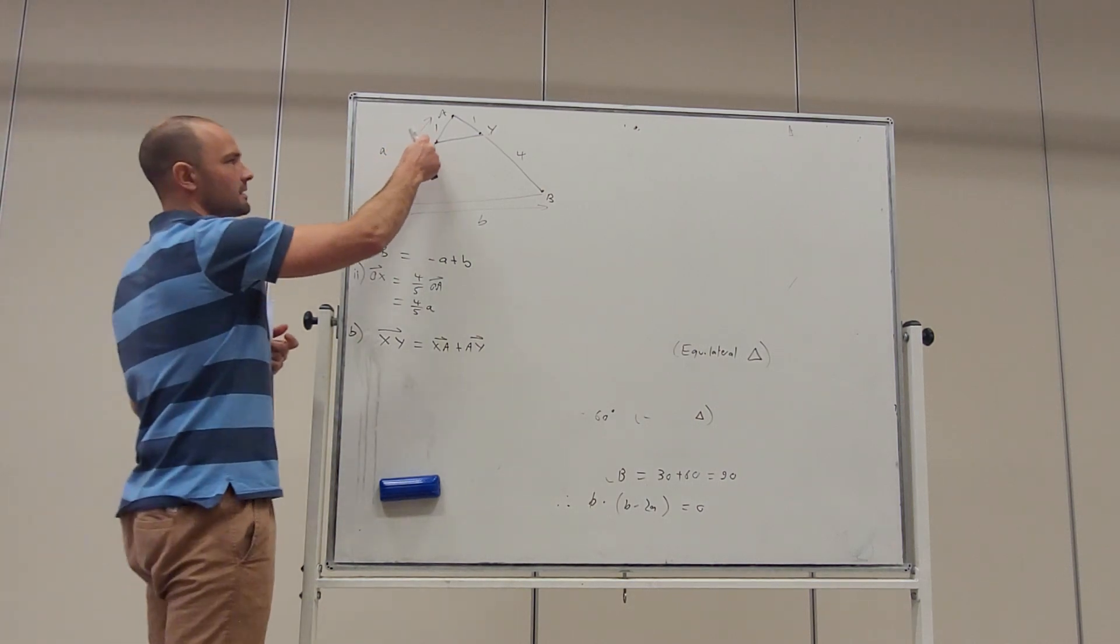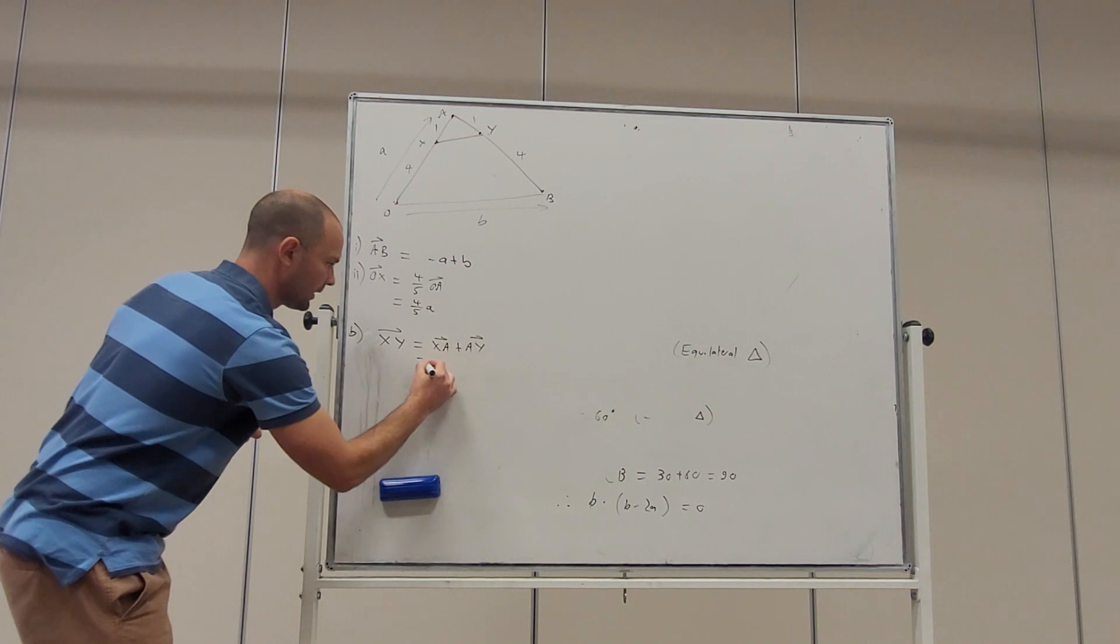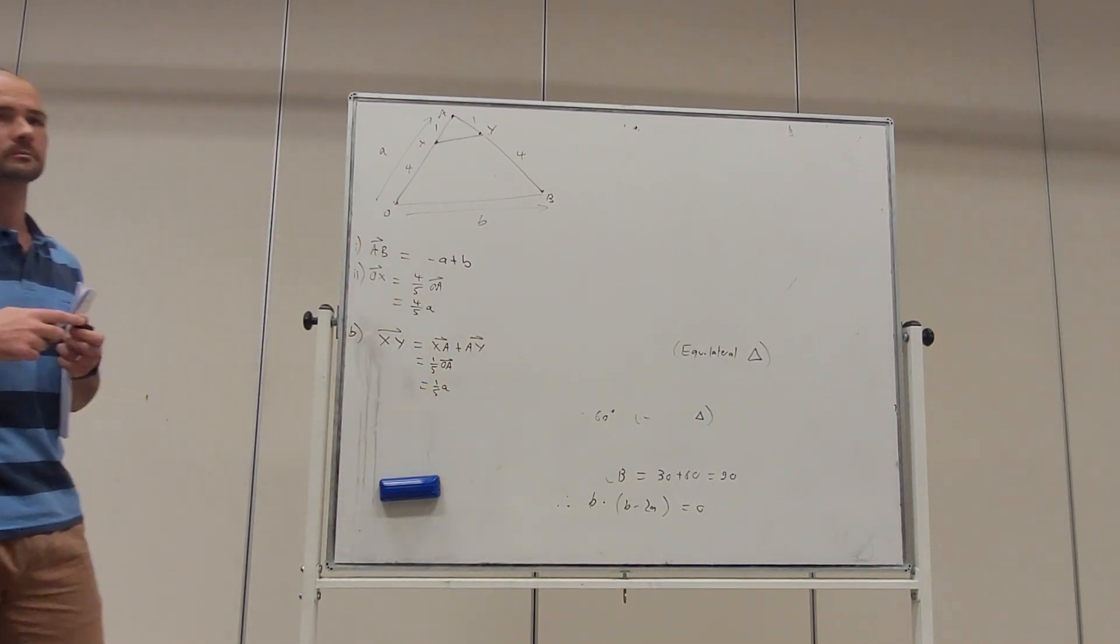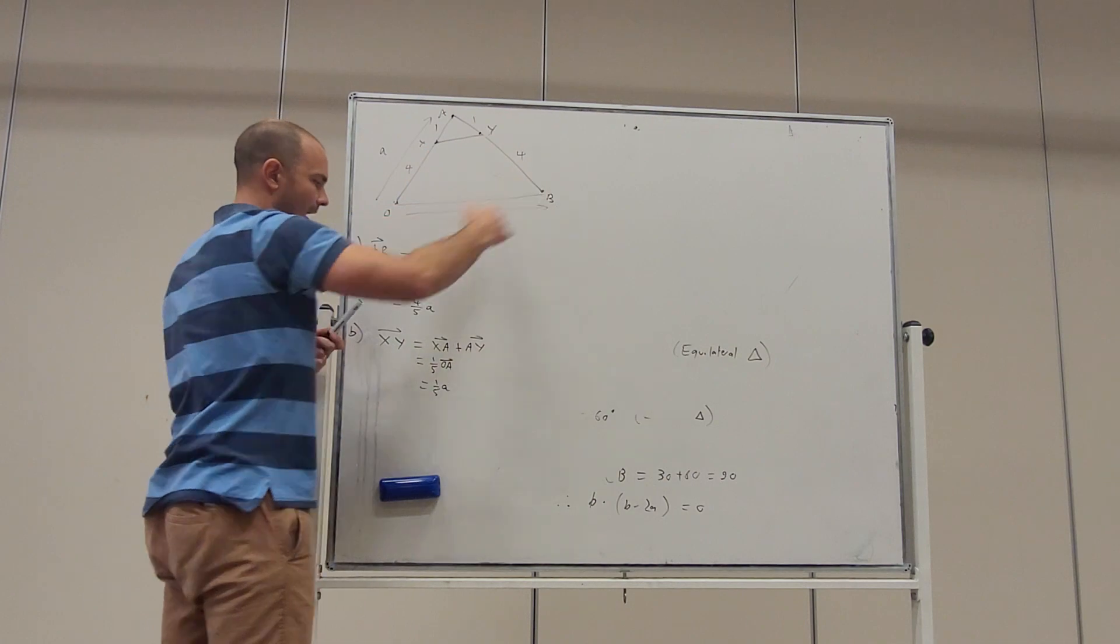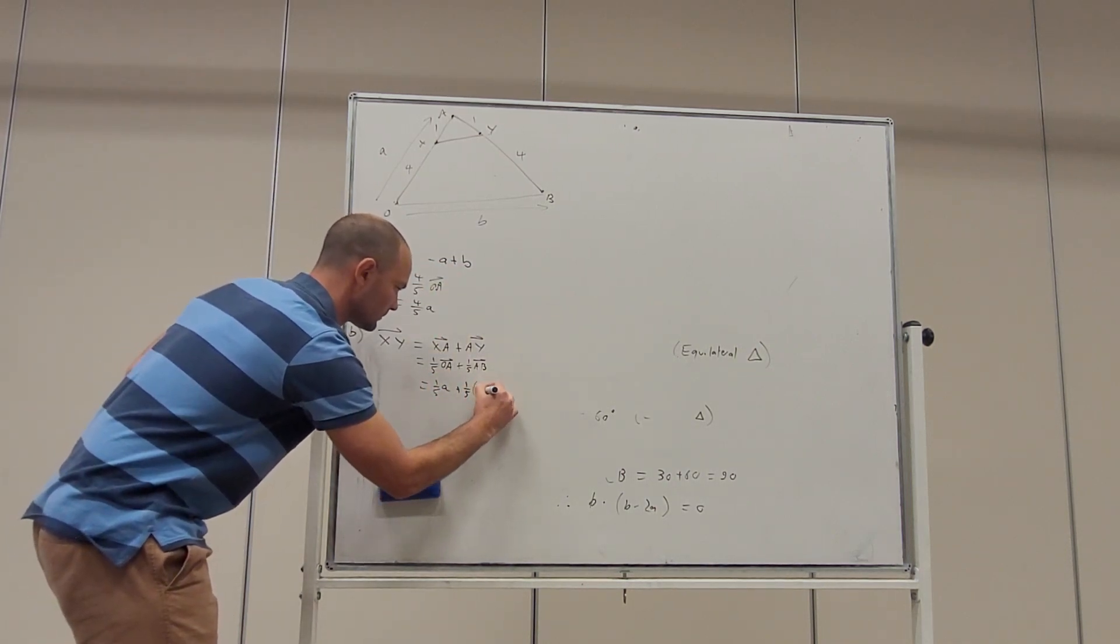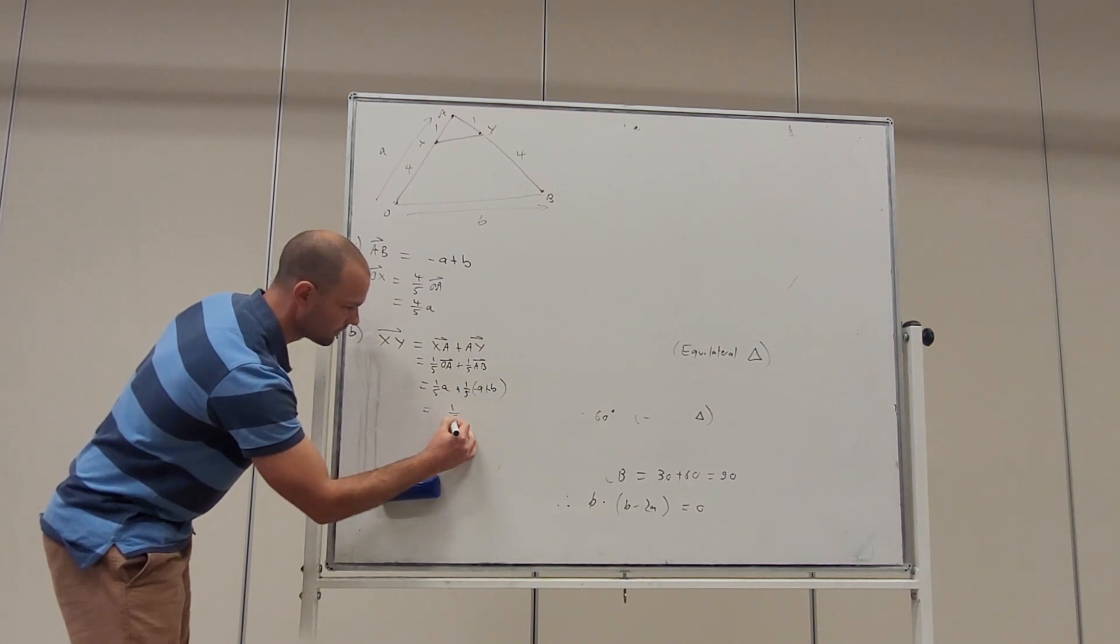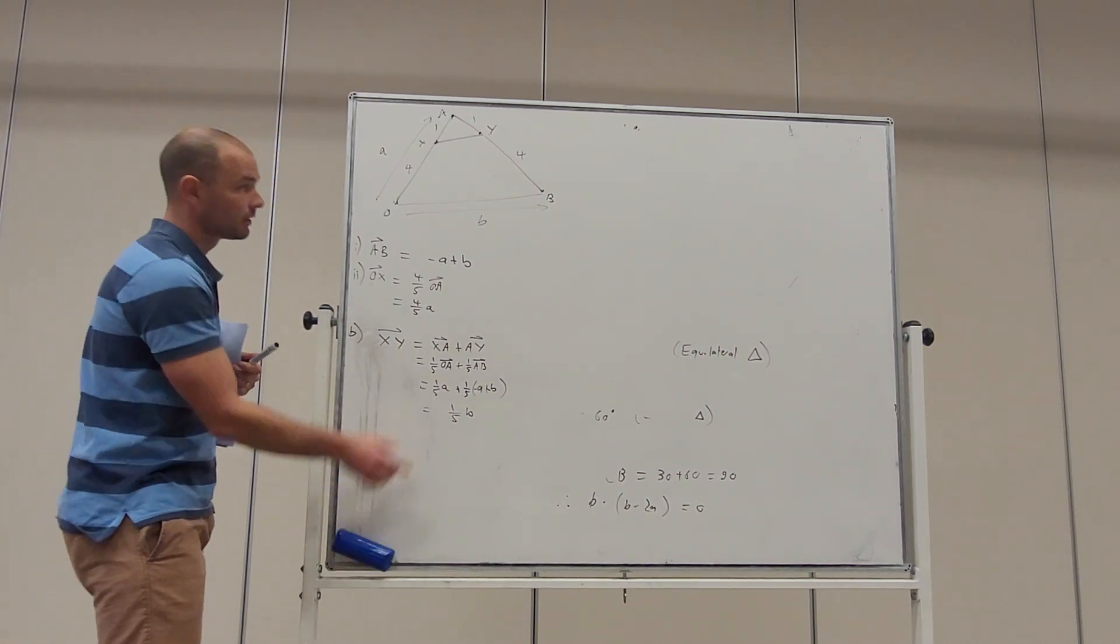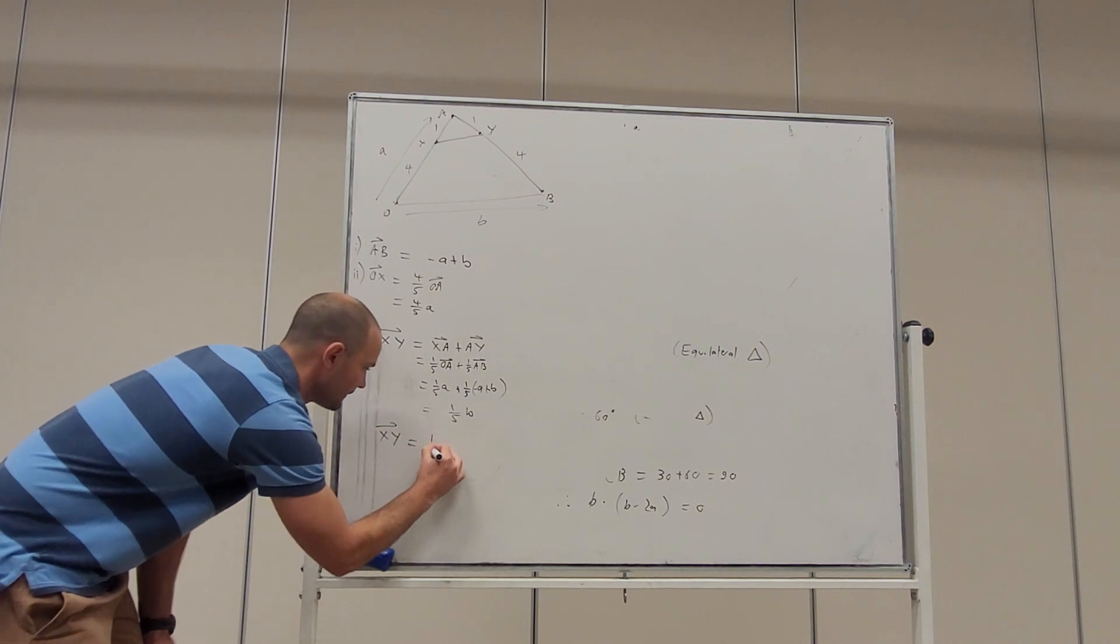Now, the vector from X to A is one fifth of the vector from O to A. All right. So, we can write XA as one fifth of OA, which is one fifth of A. And the vector from A to Y is one fifth of the vector from A to B. And we've already found vector A to B is minus A plus B. All right. The one on five distributes. The A's cancel. We're left with one on five of B. All right. So, we've demonstrated they're both in terms of B. They're both scalar multiples of B.